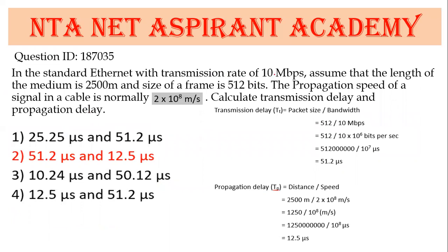Next question: Transmission rate 10 Mbps, distance 2500 meters, frame size 512 bits, signal propagation speed 2×10⁸ m/s. Calculate transmission delay and propagation delay. Transmission delay = 512 bits / 10 Mbps = 51.2 microseconds. Propagation delay = 2500 / (2×10⁸) = 12.5 microseconds. Right answer is option 2.